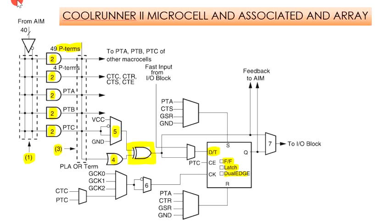The CK input and asynchronous S and R inputs can each be programmed to come from several different sources. MUX 6 can invert the clock input or not, so that the flip-flop can trigger on either clock edge. MUX 7 selects either the flip-flop output or the XOR output and passes it to the IO block (input-output block).